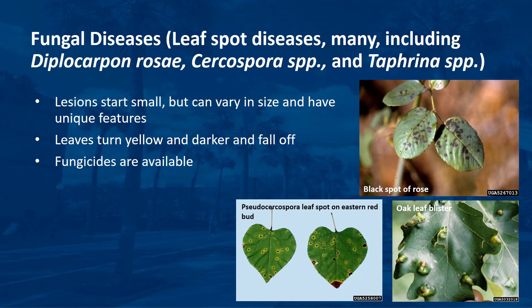Many ornamental plants are susceptible to numerous species of fungi that cause leaf spots. Lesions usually start out small but can vary in size and have unique features. In severe cases, leaves turn yellow and darker and finally lead to defoliation. Several common examples include black spot of rose, pseudocercospora leaf spot, and oak leaf blister. Many fungicides are available for treatment.